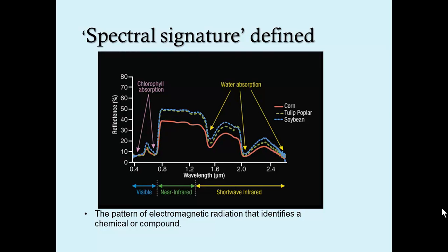If we define a spectral signature as the pattern of electromagnetic radiation that identifies a chemical or compound, we can display this pattern on an XY graph of wavelength versus reflectance.